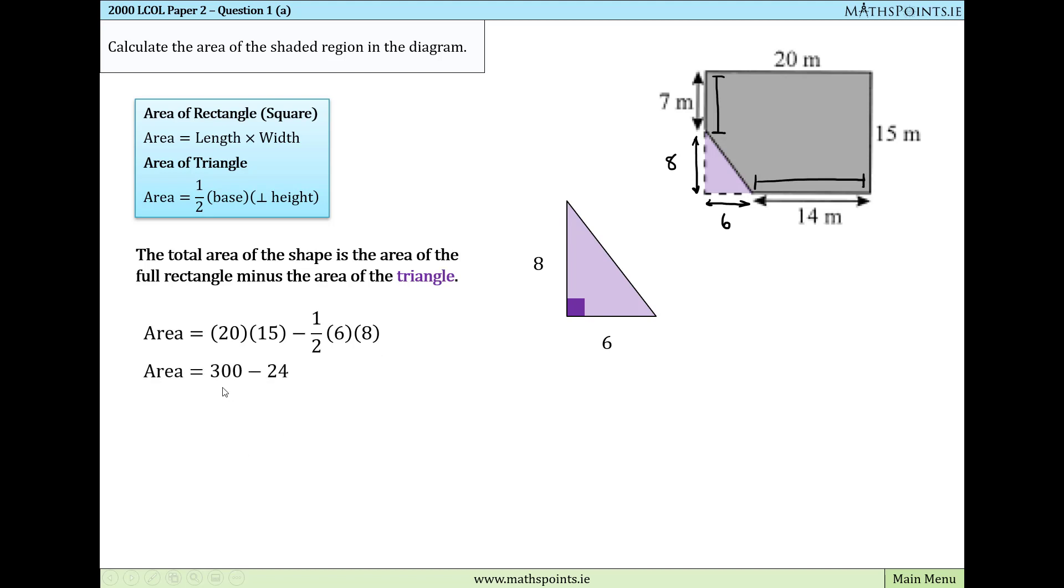The rectangle gives us an area of 300 and the triangle gives us an area of 24. If we subtract the 24 from the 300, we'll be left with 276 meters squared, which is the area of the shaded region of the diagram. Make sure to put down our units—area is measured in meters squared. If we forget to do that, we can lose one mark.